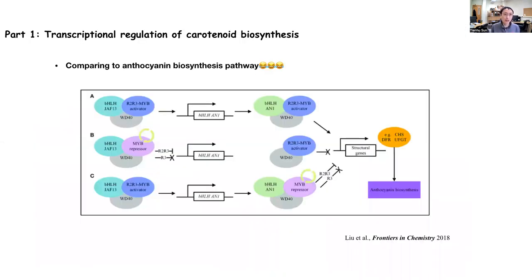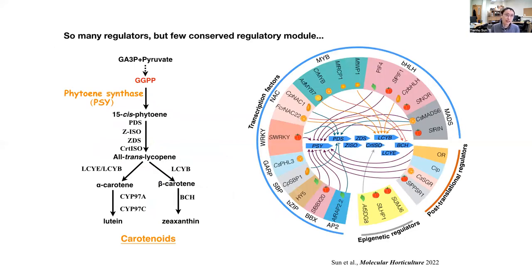First, let's talk about the transcriptional regulation of carotenoid biosynthesis. Compared to anthocyanin biosynthesis, which has a well-known three-protein family model — bHLH, MYB, and WD40 — regulating the pathway, for carotenoid biosynthesis we don't have a really conserved model. But that also means we have more opportunities to finally reveal the conserved regulatory mechanism of carotenoid biosynthesis.